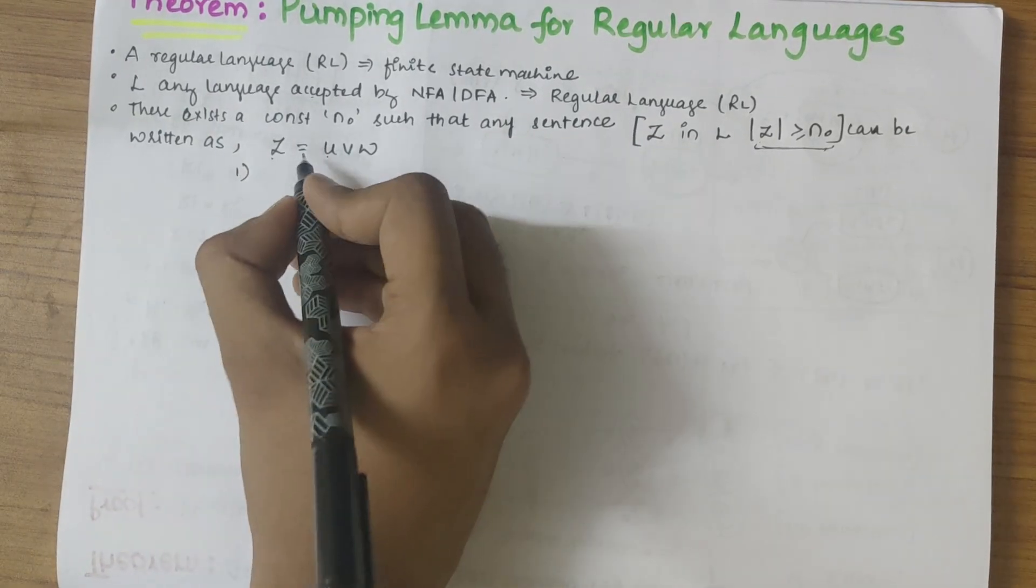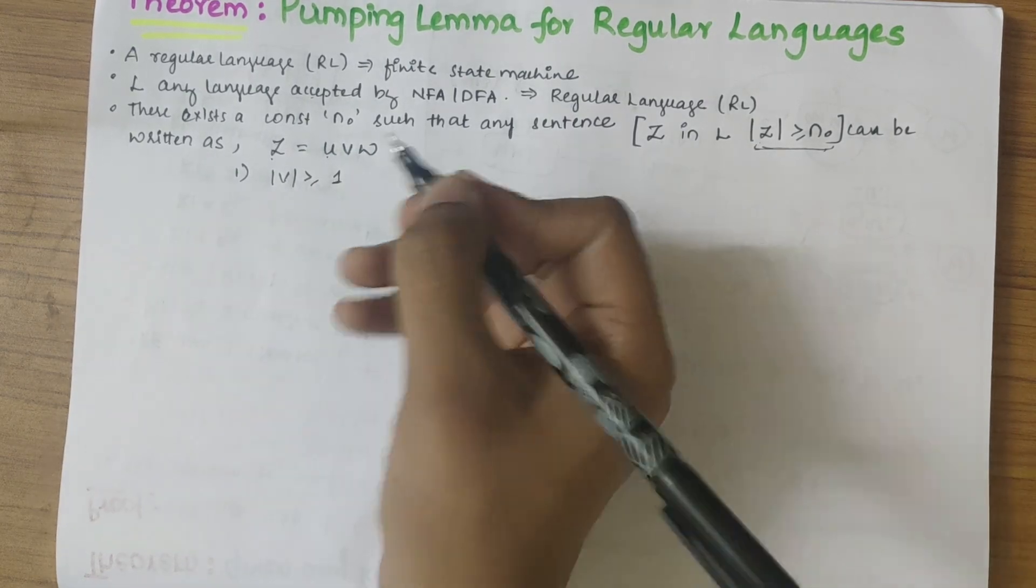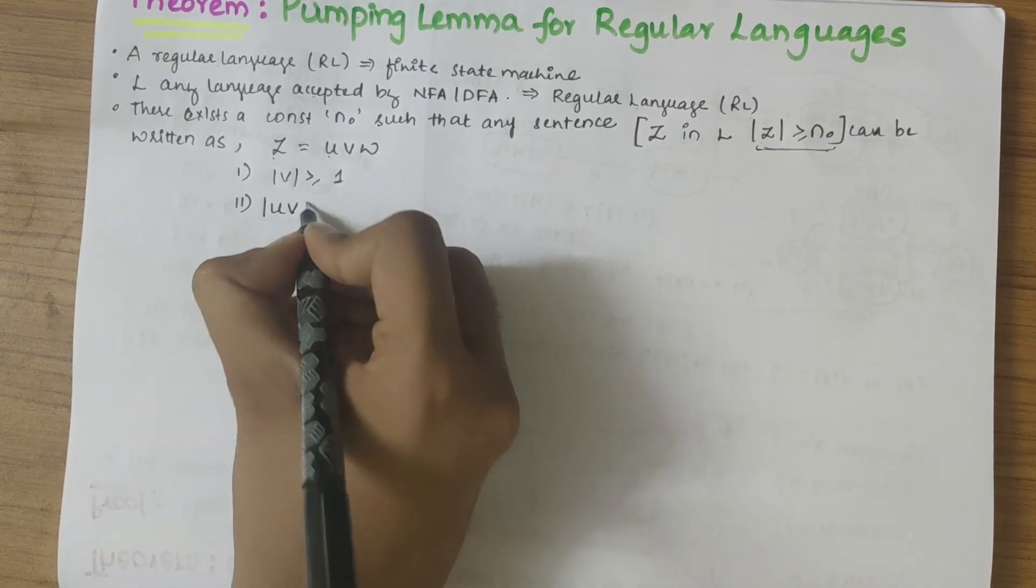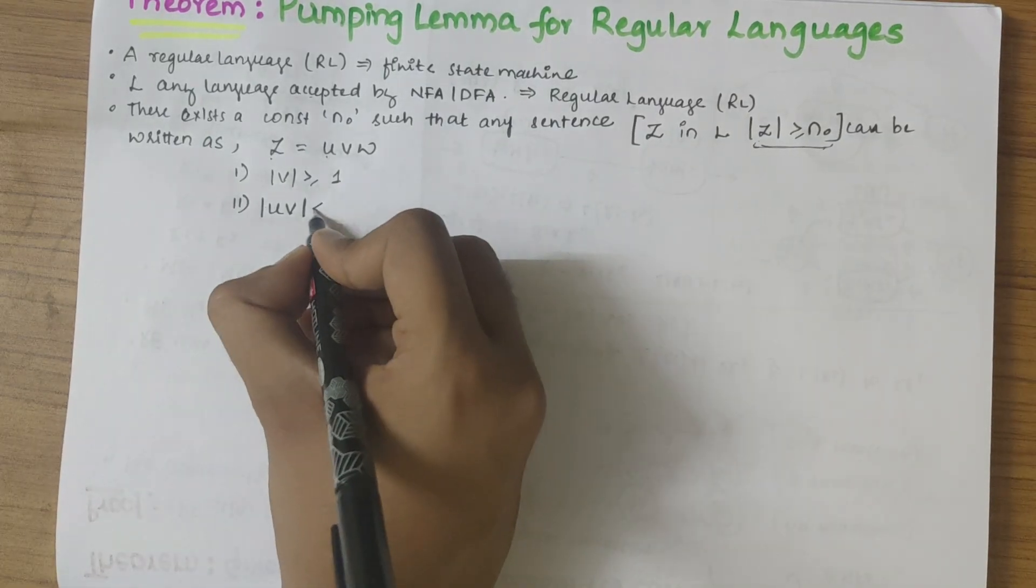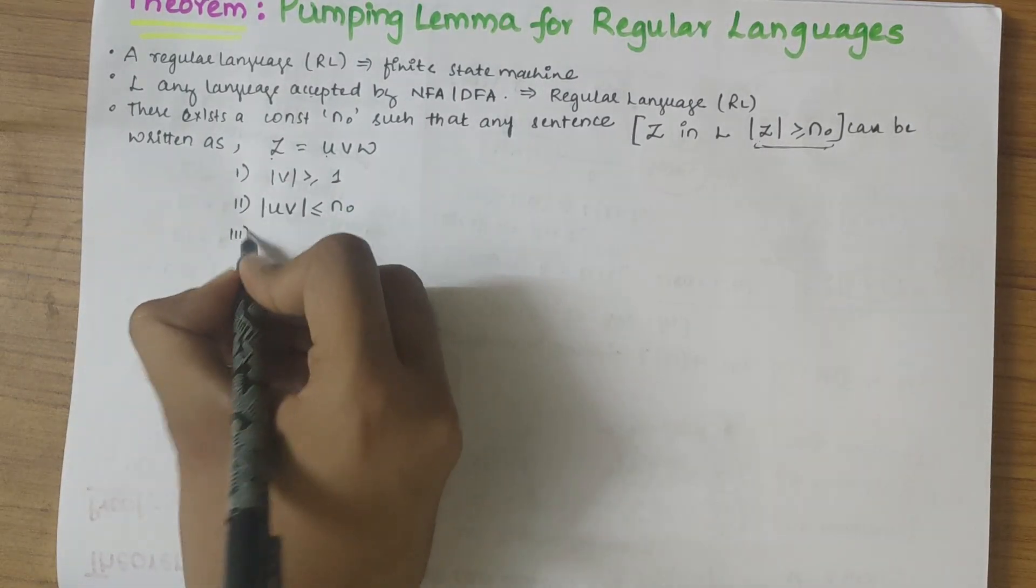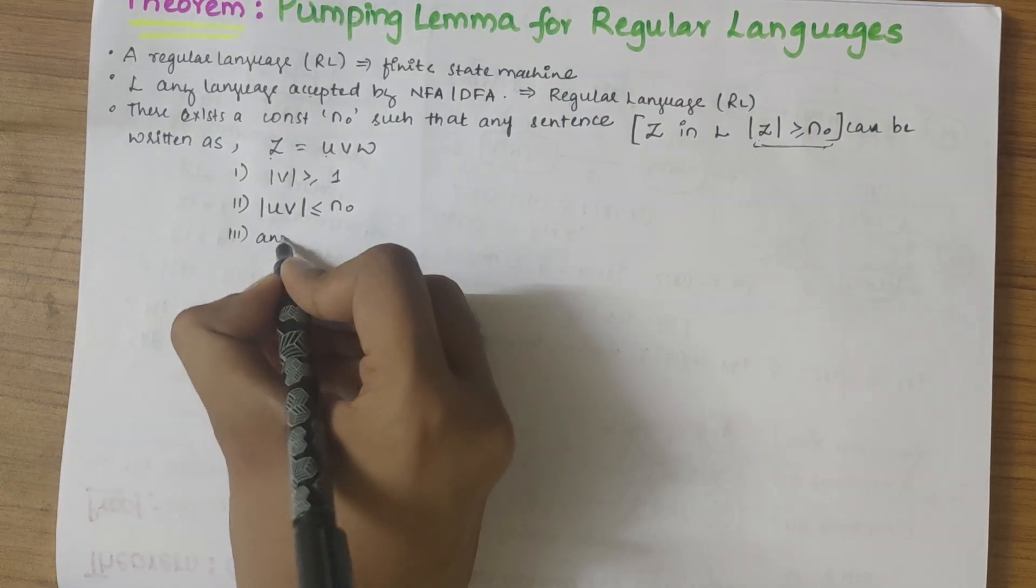So here there are three conditions. The first one says that the length of v should be greater than or equal to 1. The second one says that the concatenation of u v should be less than or equal to n0 constant. And the third one says that any string of the form...